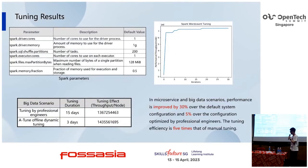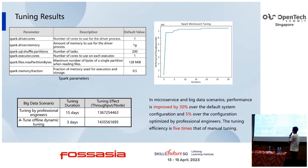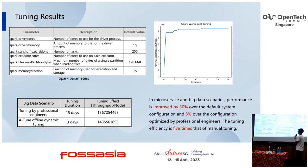Now we will present several tuning results. In Spark, there are several tunable parameters. If we use the default values, they can't get the best performance. After ATUN tuning, performance is improved by 30% over the default system configuration and 5% over the configuration optimized by professional engineers. The tuning efficiency is five times that of manual tuning.